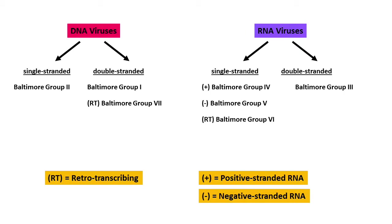In the last video we saw this image where we divided the viruses into DNA viruses and RNA viruses. DNA viruses could be divided into single-stranded (Baltimore Group 2) and double-stranded (Baltimore Group 1, as well as Group 7 for retrotranscribing). Under RNA viruses: single-stranded positive sense (Group 4), negative sense (Group 5), retrotranscribing (Group 6), and double-stranded RNA (Group 3).